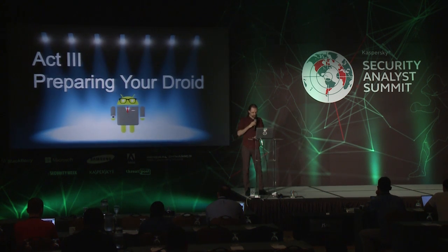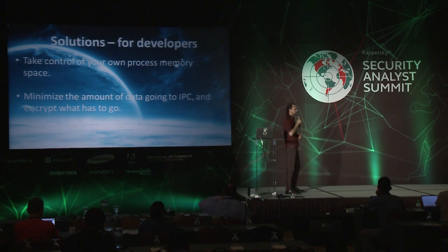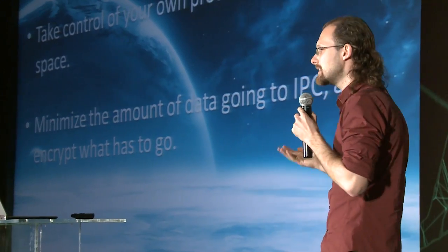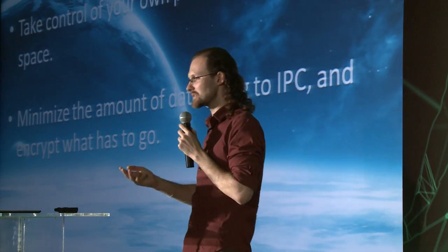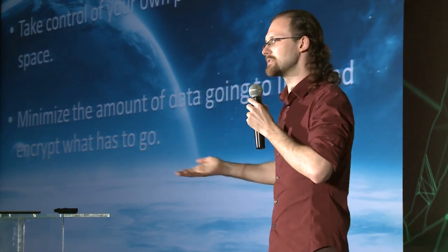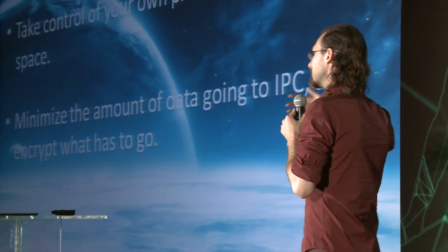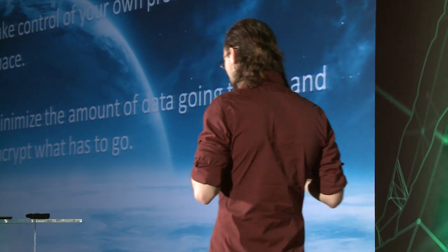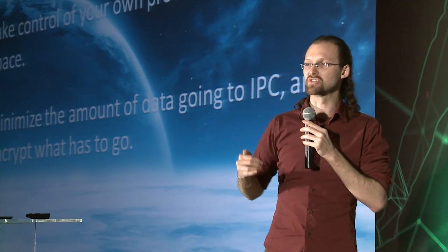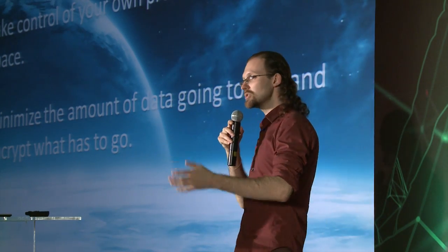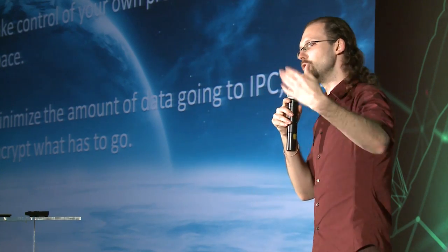So the third part: what can we do about it? If you're an Android developer, you have two vectors of operation. First, you can take control of your own process memory — scan the binary yourself, see if anything looks fishy — but that's problematic because you don't necessarily know how to do it, and it won't solve the problem of the other side: what if someone injected something into the keyboard service? The better way is to be aware of this type of attack, minimize the amount of data going through inter-process communication. Note that from one activity to another it goes through the binder and back into your app. If you have to send sensitive information outside the app, encrypt it and decrypt it on the other side in the new activity.